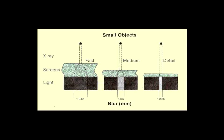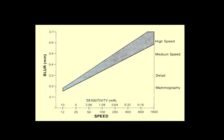By using a screen we decrease spatial resolution and also add quantum mottle, which adds noise to our image. This diagram shows how blur increases at higher speeds because of screen thickness, and as we move to a less sensitive screen we achieve better detail. Detail in mammography is represented at the lower end, while high speed and medium speed screens have higher blur.